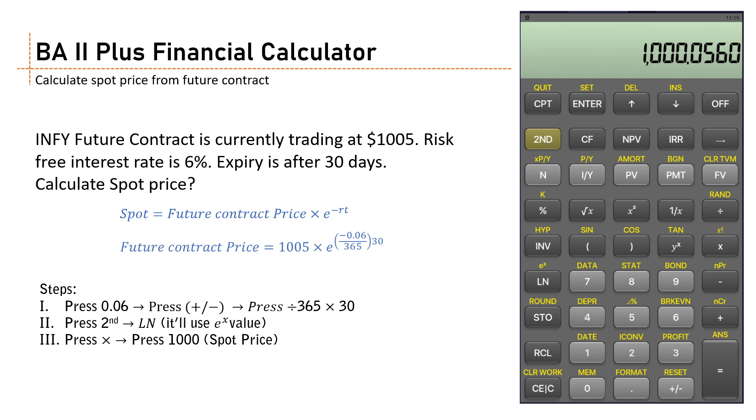This spot price is derived from the future contract. This is nothing but simple compounding and discounting. Here you are using the future value times exponential minus rt. We simply discounted the future price or the future value to bring it to the present value, which is the spot rate. This is very simple - you need to practice and you'll get expert. Take care, bye bye.